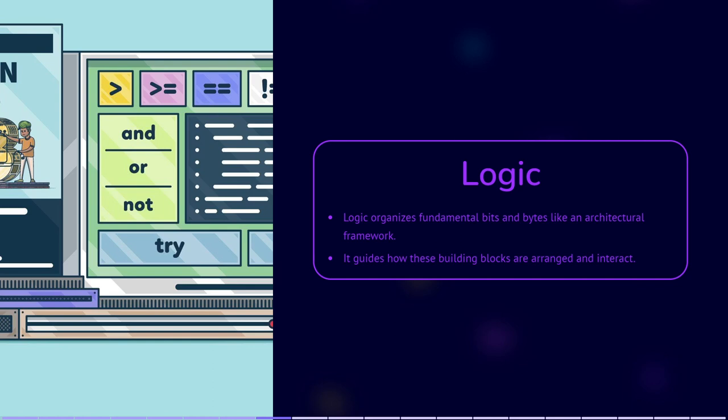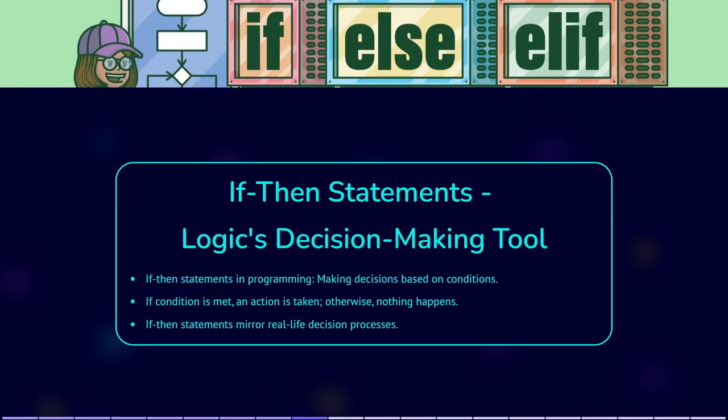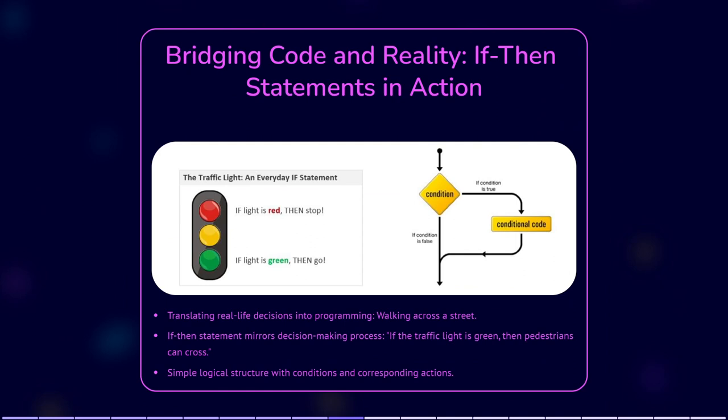In programming, an if-then statement is a way to make a decision based on a certain condition. It's like telling the computer: if something is true, then do something; otherwise, don't do anything. If we break down the decisions that go into walking across the street using programming terms, we would get an if-then statement. An if-then statement is a basic logical structure that presents conditions and their resulting actions.